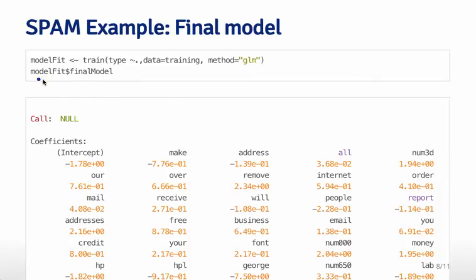Once we fit that model, we can actually look at the model. The way you can do that is look at the final model component of the model fit object. You take the model fit object and then type dollar sign and then finalModel. It will tell you the actual fitted values you got for that GLM model.